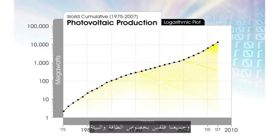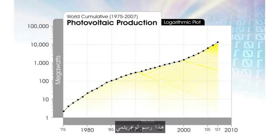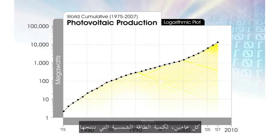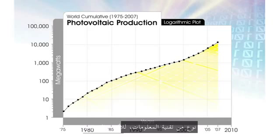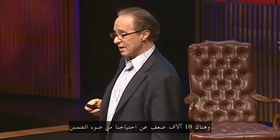We're all concerned about energy and the environment. This logarithmic graph represents a smooth doubling every two years in the amount of solar energy we're creating, particularly as we're now applying nanotechnology — a form of information technology — to solar panels. We're only eight doublings away from solar meeting 100% of our energy needs, and there's 10,000 times more sunlight than we need.